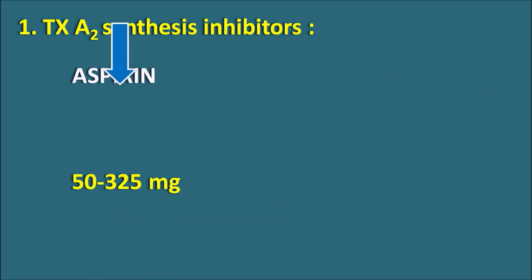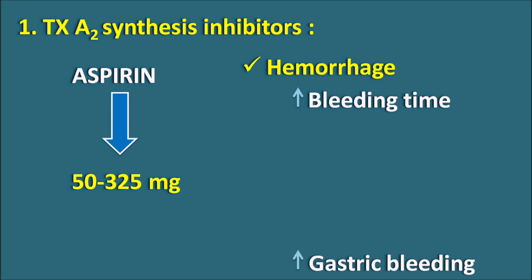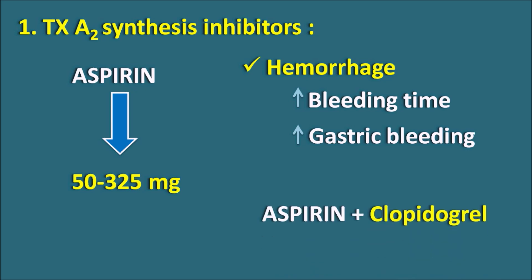Aspirin is given at a dose of 50 to 325 mg as an antiplatelet. When used as an analgesic, it can be given at greater than 325 mg. The main side effect is hemorrhage, as aspirin acts as an antiplatelet and increases bleeding time in patients. Bleeding time should be checked when aspirin is given for a prolonged period. This drug can also increase gastric irritation and risk of gastric bleeding. Aspirin can be combined with other drugs — one combination is aspirin plus clopidogrel, where clopidogrel is an ADP receptor antagonist.